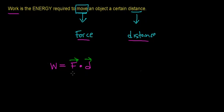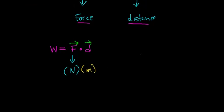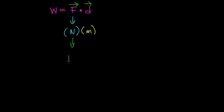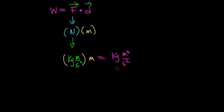Before we go further, let's talk about the units used to measure work. Force is measured in newtons, and distance or displacement is measured in meters. A newton has base units of kilogram meter per second squared, and when we multiply that by a meter, we get kilogram meters squared per second squared. We give these base units a special name — we call them a joule, abbreviated with a capital J. One joule is the energy required to apply a 1 newton force to an object over a distance of 1 meter.